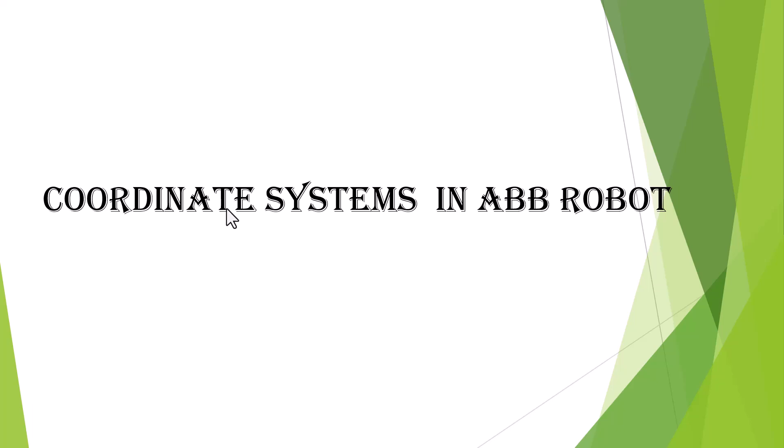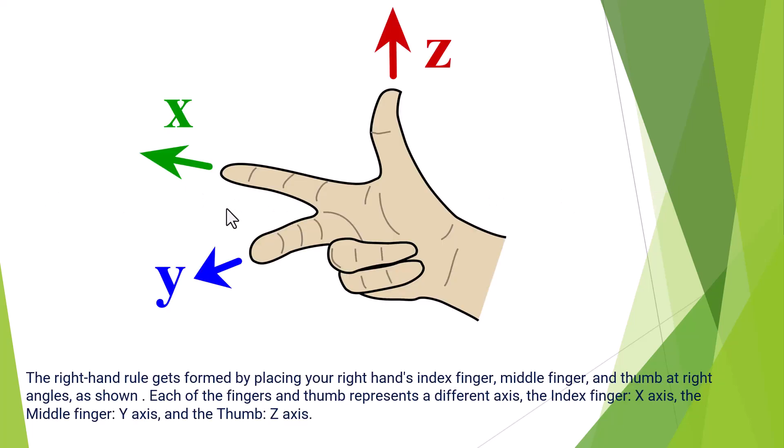We often use the right-hand rule to define position. Look at this picture. Open your right hand. The index finger, middle finger, and thumb are 90 degrees. The index finger points to the X axis, the middle finger directs to the Y axis, the thumb points to the Z axis.